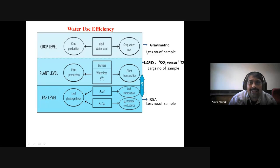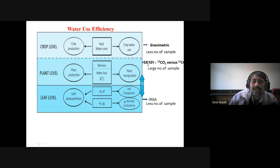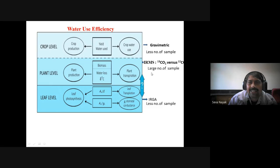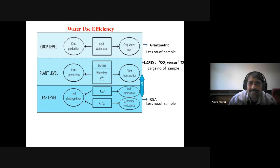Water use efficiency at three levels: crop level (gravimetric) — less number of samples can be estimated because it is a gravimetric parameter involving weighing, which is difficult for large numbers. Plant level: whole plant protection biomass water loss. Isotope ratio mass spectrometry — carbon isotope discrimination study — by this we can estimate large numbers of samples because we need only ground dry samples which can be stored and estimated later. This is possible for large numbers. Leaf level IRGA: large numbers of samples can't be estimated easily, so for water use efficiency the isotope ratio mass spectrometry is a useful and convenient method.